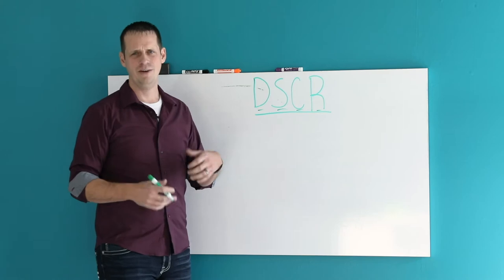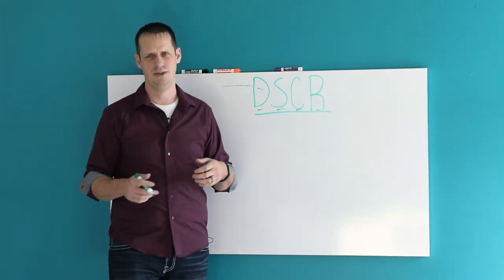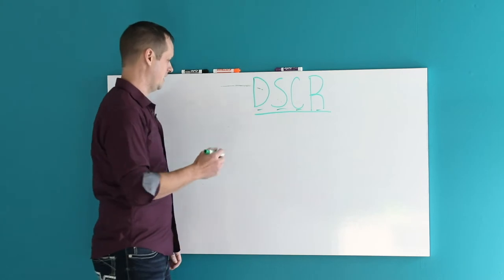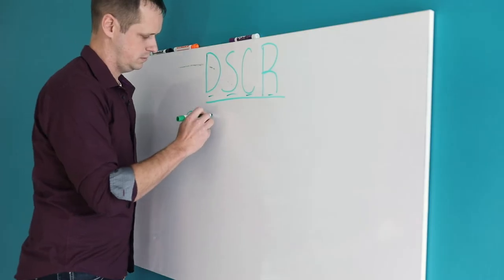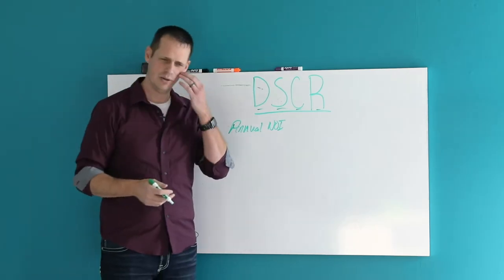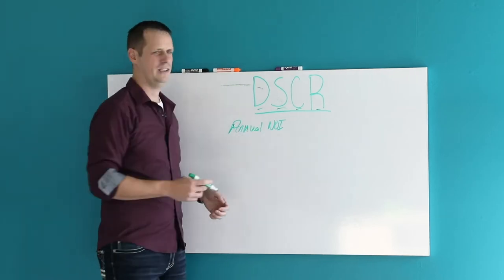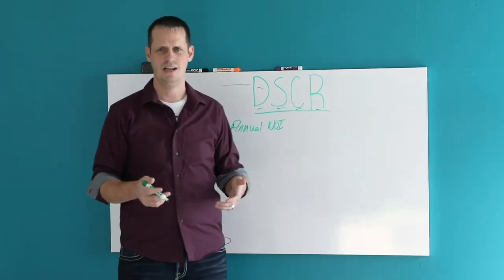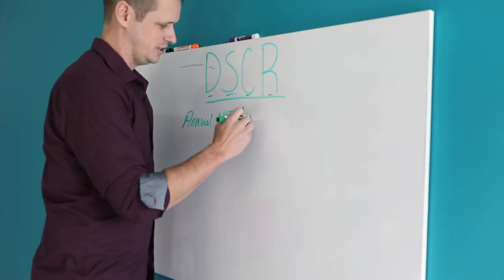They'll feel confident with what you've got and what you're showing them. So how do we figure this out? How do we determine what our debt service coverage ratio is? It's going to be your annual NOI divided by your annual debt service.